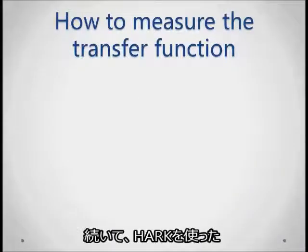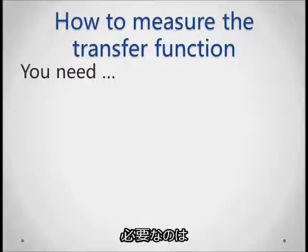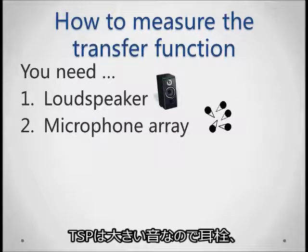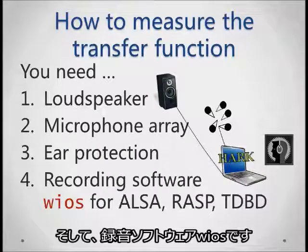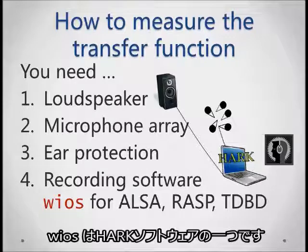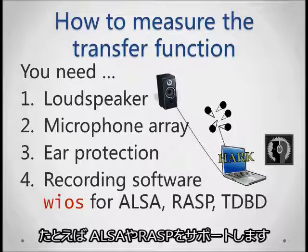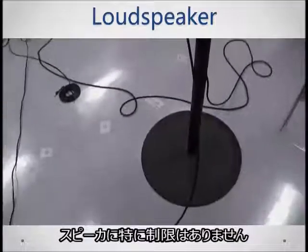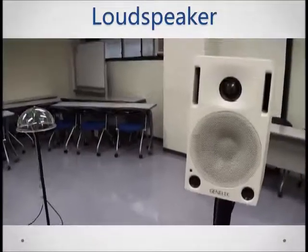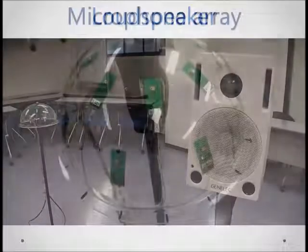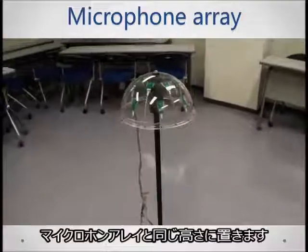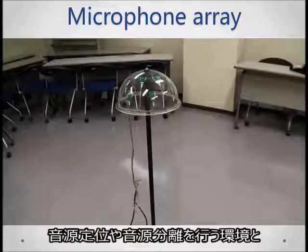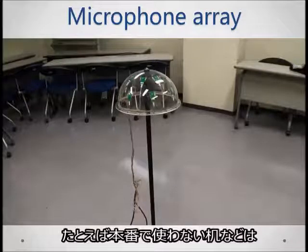Now we'll go over how to use HARC to measure the transfer function. You'll need a loudspeaker to play the TSP, a microphone array — for example on a robot — to record it, ear protection because the TSP is still quite loud, and the recording software WIOS, which is part of the HARC software suite and supports various recording devices such as ALSA or RASP. Any loudspeaker on a stand will work well, typically at around the same height as your microphone array. Make sure the array is in the same configuration as when you'll be localizing and separating sounds — don't place it temporarily on a box, for example.